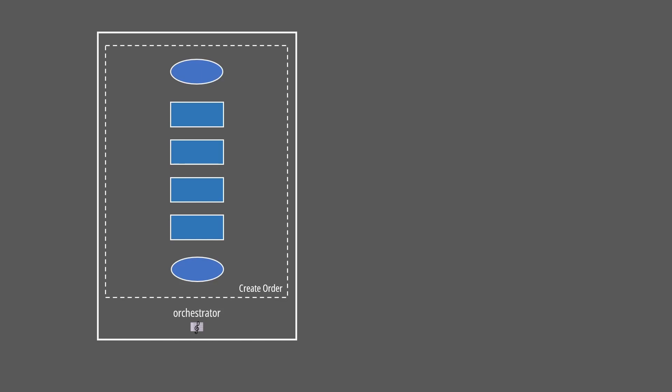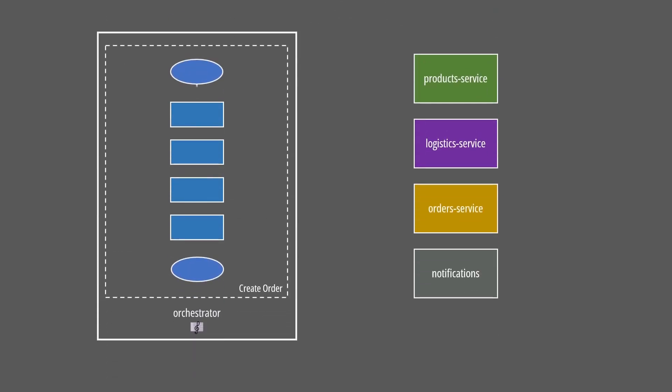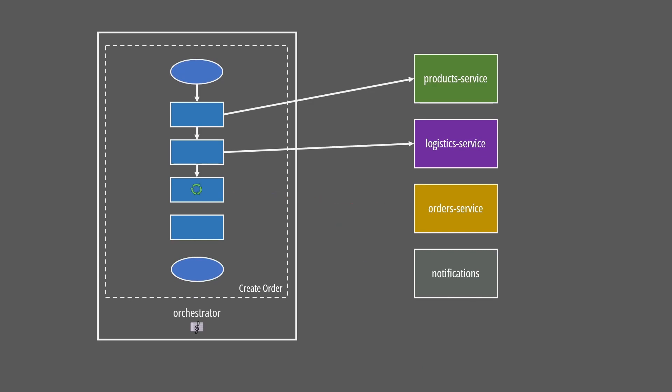A possible approach is to use orchestration. In this case, a service implements a workflow to coordinate interactions with other microservices. This approach is very intuitive, but it gets complicated when you want to ensure consistency across the different domains. An operation might fail in the middle of a workflow, and we need to use patterns to retry the operation, resume the workflow, or in the worst case, compensate for the failure.